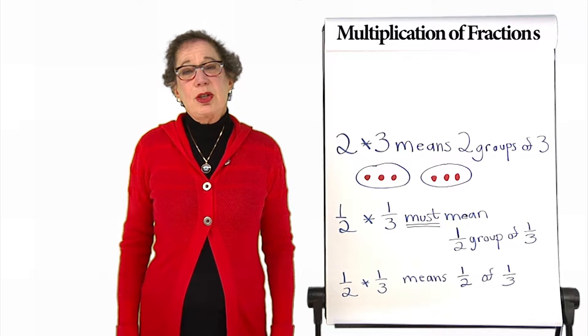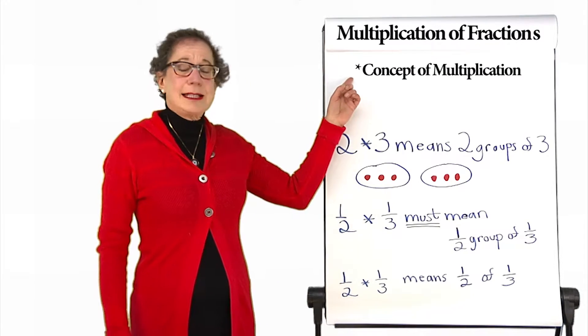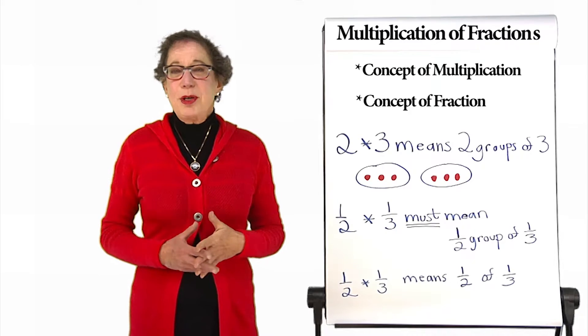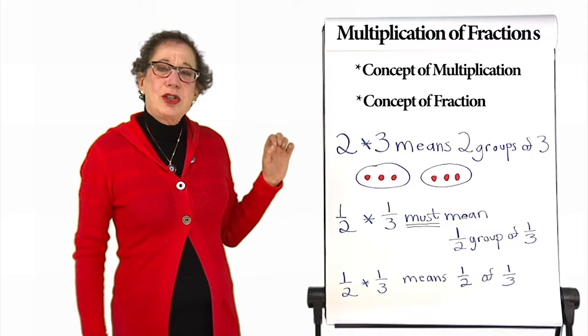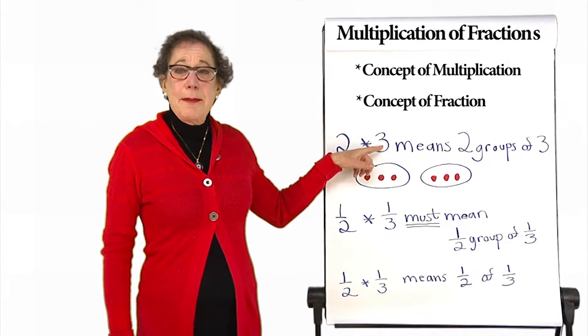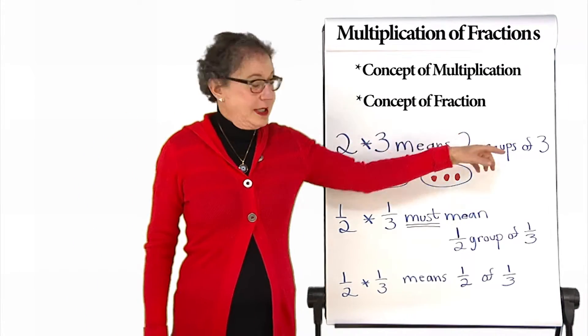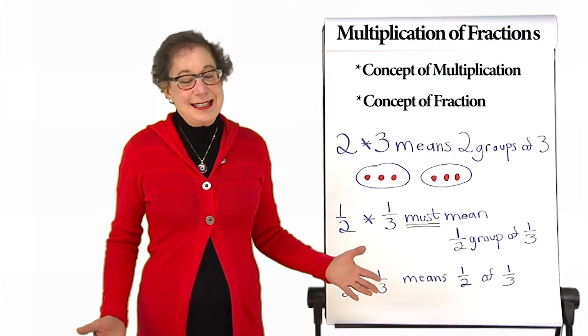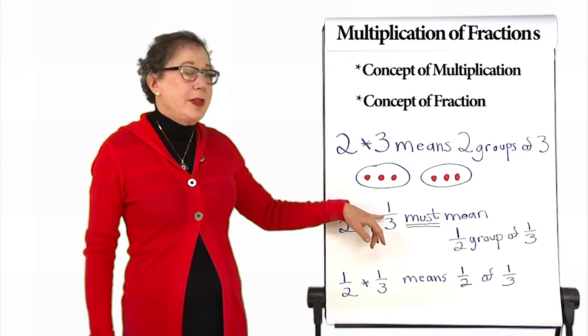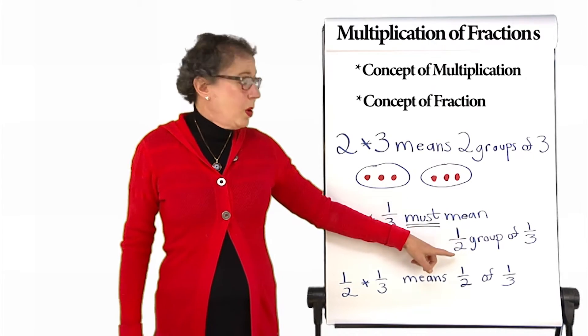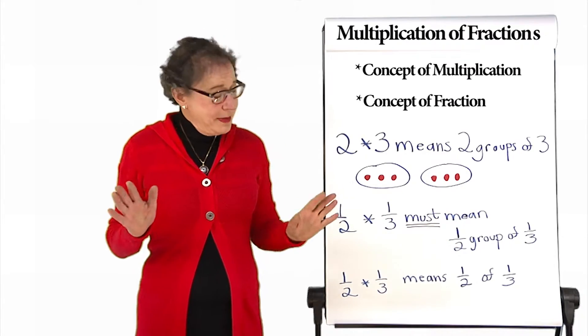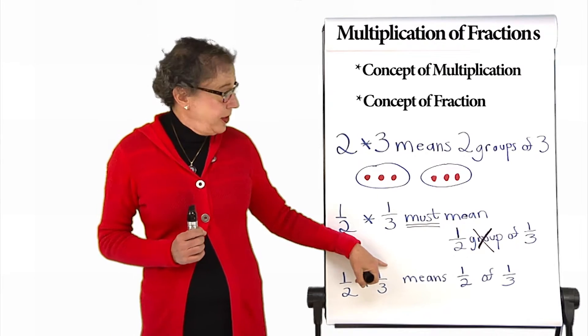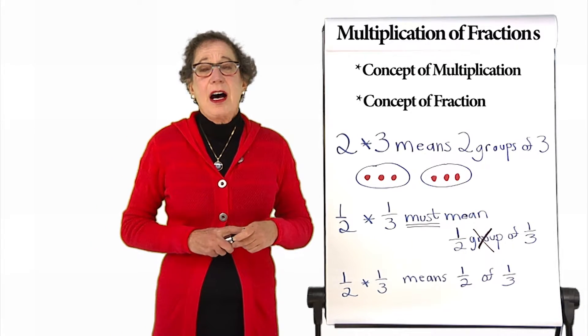Multiplication of fractions depends on two critical building blocks: concept of multiplication and concept of fraction. We'll begin with concept of multiplication. Multiplication means groups of. So two times three means two groups of three. Here's one group of three. Here's a second group of three. And the answer is six. So one-half times one-third must mean one-half group of one-third. That doesn't quite make sense, but this does. One-half times one-third means one-half of one-third.